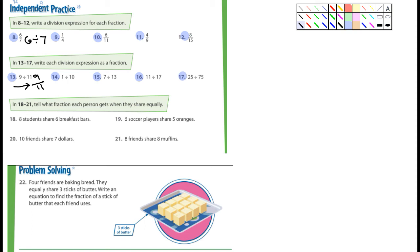Number 18. 8 students share 6 breakfast bars. So they have 6 breakfast bars that are being divided by 8 students. Or if you were to reduce it, what would that be reduced? Well, 2 goes into 6, 3 times. 2 goes into 8, 4 times. Okay. It says tell what fraction. So you're writing a fraction. So I want you guys to do 18, 19, 20, and 21. Next page.